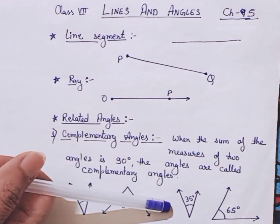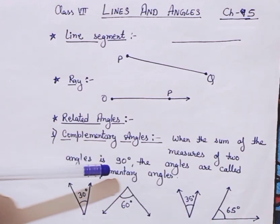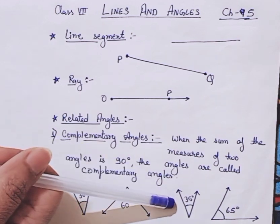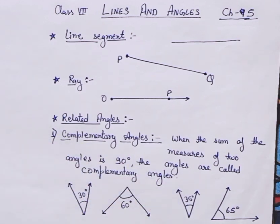Second example is the angle 35 degrees and 65 degrees. Again, on adding both, just check if the answer is 90 or not. So you will see, no, the answer will be greater than 90 degrees. So this example is not the example of complementary angles.